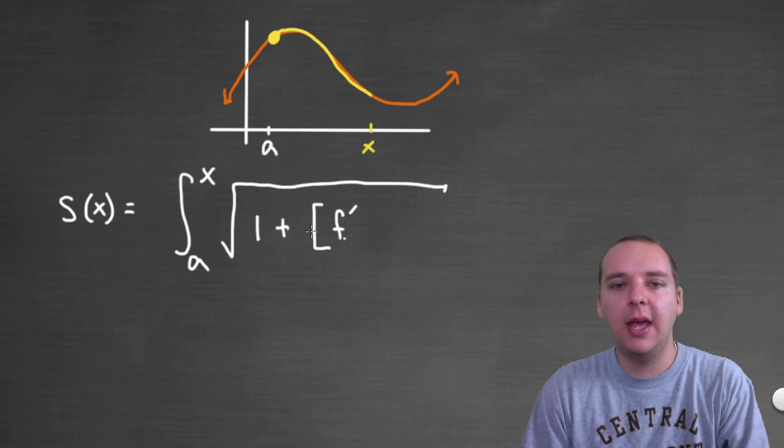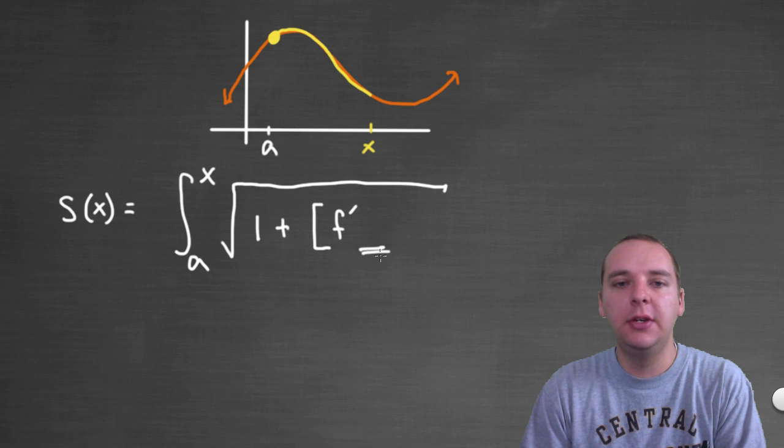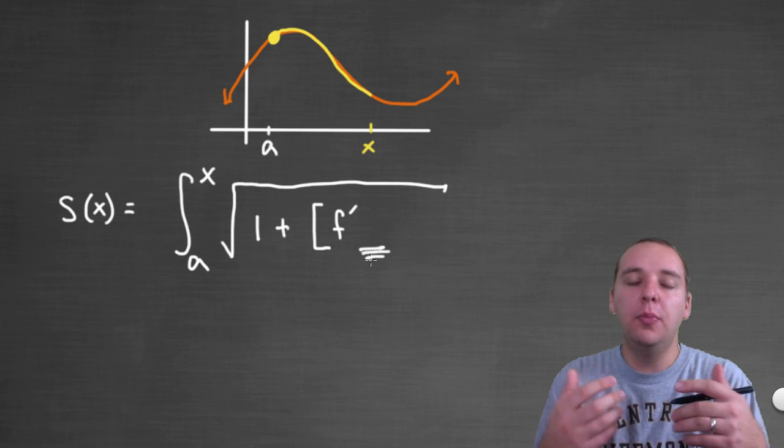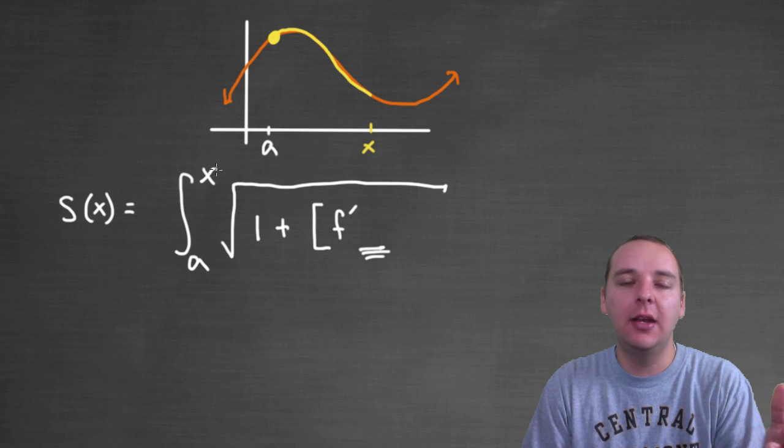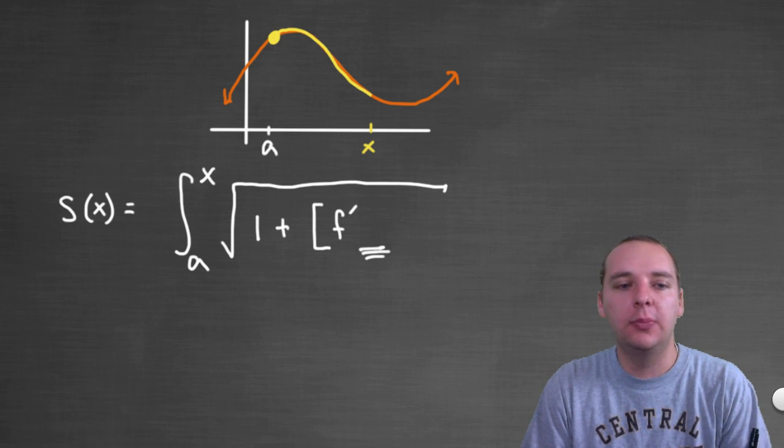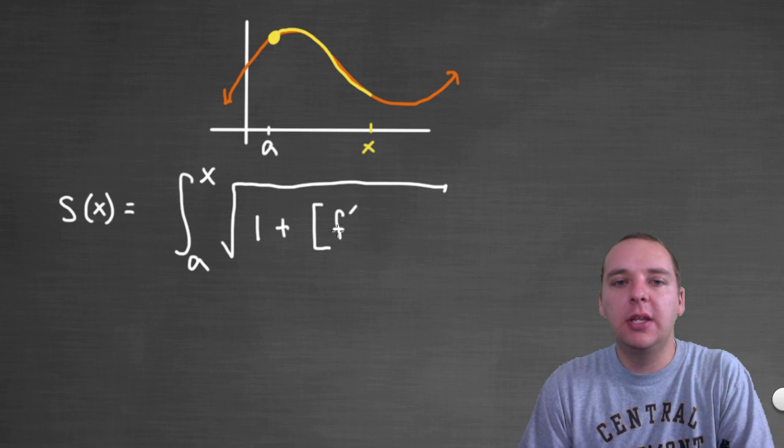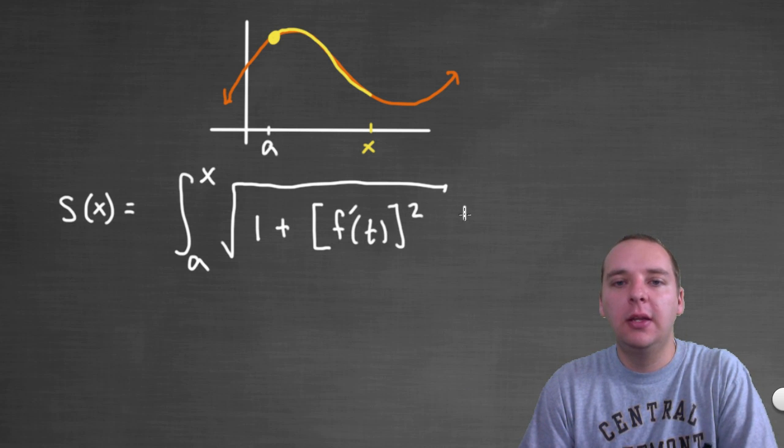The only issue is you just can't have the same variable here, because what needs to happen is that whatever variable is in your integrand needs to range from the already determined a and x, which should be set before you start the integration process. So, what's the easy fix, we just change the letter. So we'll say f prime of, most textbooks use the letter t, quantity squared dt.